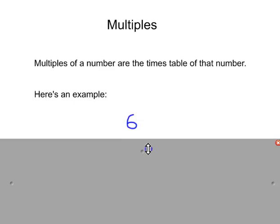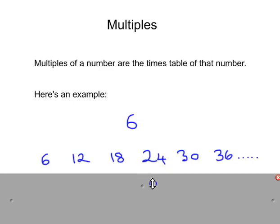Okay, I'll move on now to multiples. Multiples are the times table of a number. For example, multiples of 6 are 6, 12, 18, 24, 30, 36, 42, and so on.